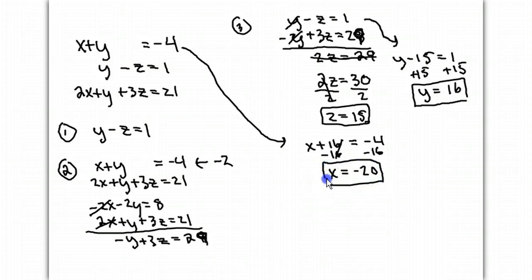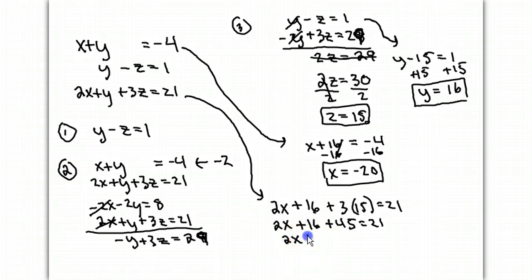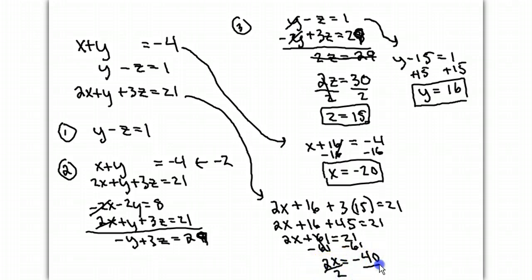Just to show you that it wouldn't matter which equation you plug into — let's try the last equation. Plugging in: 2x plus 16 plus 3 times 15 equals 21. That's 2x plus 16 plus 45 equals 21, so 2x plus 61 equals 21. Subtract 61 from both sides: 2x equals negative 40. Divide by 2: x equals negative 20. As you can see, it's much more work, but you still end up with the same answer. So no matter what equation you plug into, you'll get the same answer.